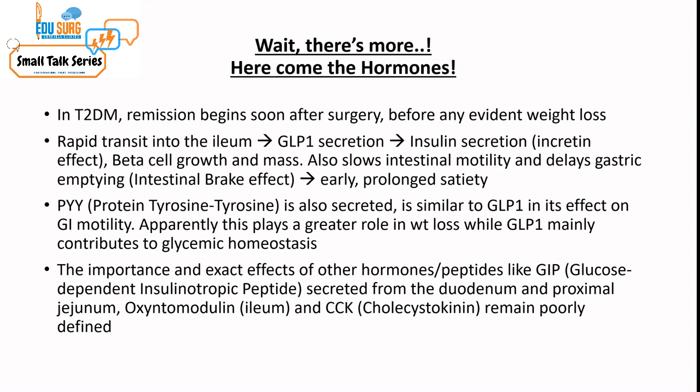GLP-1 also leads to beta cell growth and increase in beta cell mass. It also slows intestinal motility and delays gastric emptying — called the intestinal brake effect — which leads to early and prolonged satiety. PYY, or protein tyrosine tyrosine, is also secreted, which is similar to GLP-1 in its effect on GI motility. PYY apparently plays a greater role in weight loss, while GLP-1 mainly contributes to glycemic homeostasis.